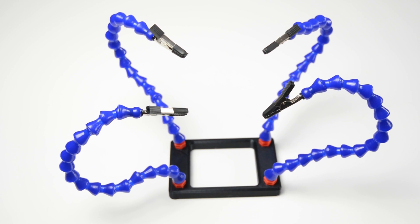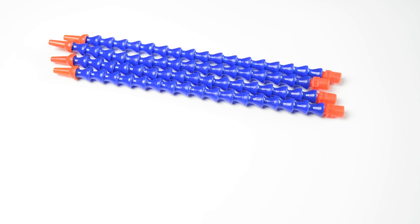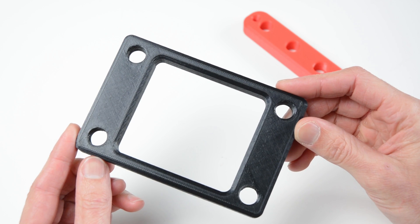To begin the build of a third hand helper we will need four flexible coolant pipes and four alligator clips. Next I have designed and printed holders to mount the coolant pipes.